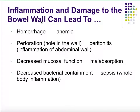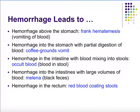Inflammation and damage to the bowel wall can lead to hemorrhage, which will lead to anemia since you're losing whole blood and have more loss of red blood cells than normal. We can also see perforations or holes in the GI tract wall leading to peritonitis, which is inflammation of the abdominal wall. Decreased mucosal function leads to malabsorption, and decreased bacterial containment leads to sepsis and septic shock.